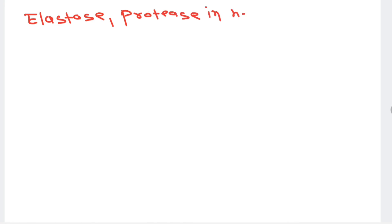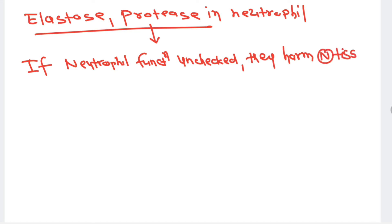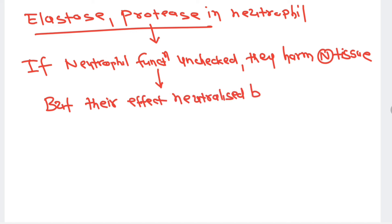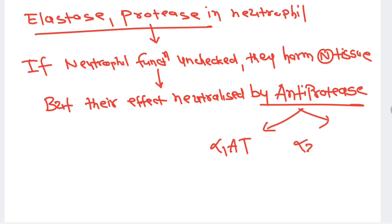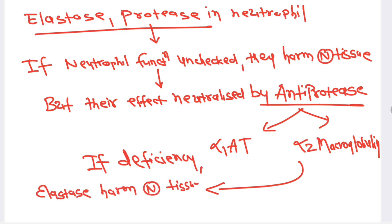Reactive oxygen species, reactive nitrogen species, lysosomal granules, and neutrophil granules are the powerful microbicidal agents. Because neutrophils contain elastase and proteases, if their function is unchecked, these substances can harm normal tissue during removal of bacteria. Their effect is counteracted by anti-proteases — alpha-1-antitrypsin and alpha-2-macroglobulin are the two main anti-protease substances. Patients with anti-protease deficiency are vulnerable to elastase-induced damage and can develop emphysema.